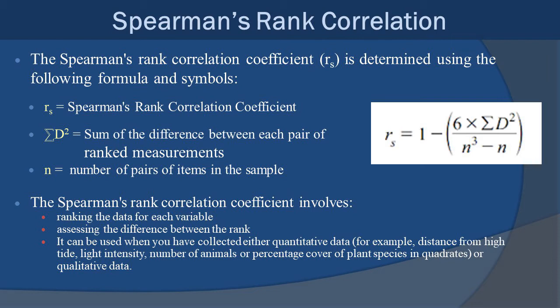Spearman's rank correlation coefficient involves ranking the data for each of the variables and then assessing the difference between the ranks. It can be used when you've collected either quantitative data, which would be example of distance from high tide, light intensity, number of animals, or percentage cover plants in a particular quadrat, or qualitative data. So you can use it a lot of different ways.